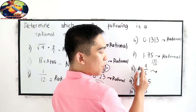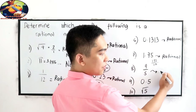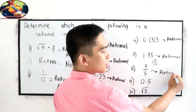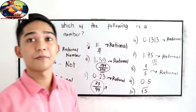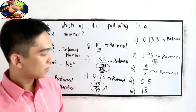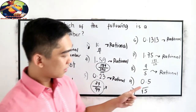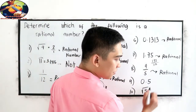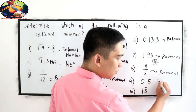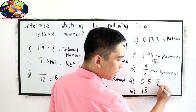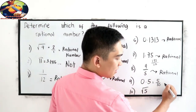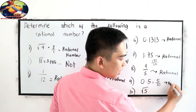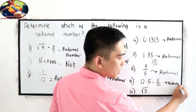Number 8: 4 over 5 — obviously it is a rational number. Number 9: 0.5. It is equal to 5 over 10, so it is a rational number.